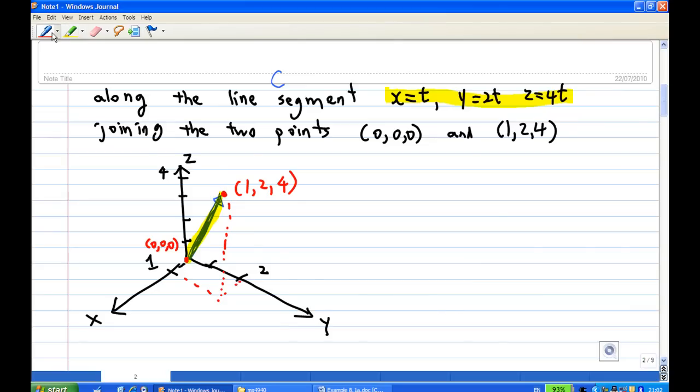In particular, you have to know what is the value of t. At the point (0,0,0), we know that t is equal to 0, you can check easily. At the point (1,2,4), t is equal to 1, you can check that easily by putting t equal to 1.